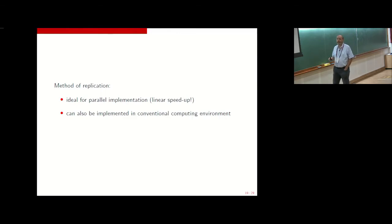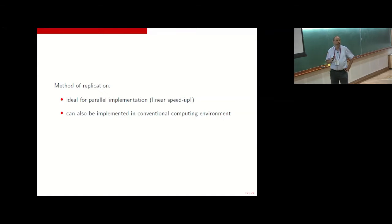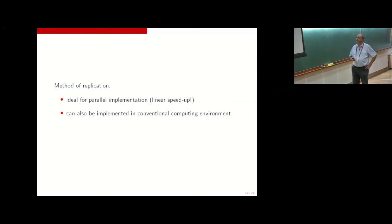With the method of replication, we can avoid doing any variance estimation. It's ideal for parallel implementation, and one of the nice things about parallel implementations is linear speedup: the algorithm runs M times faster when you have M processors. Monte Carlo often has that linear speedup characteristic — that's the best you can typically get in a multi-processor context.